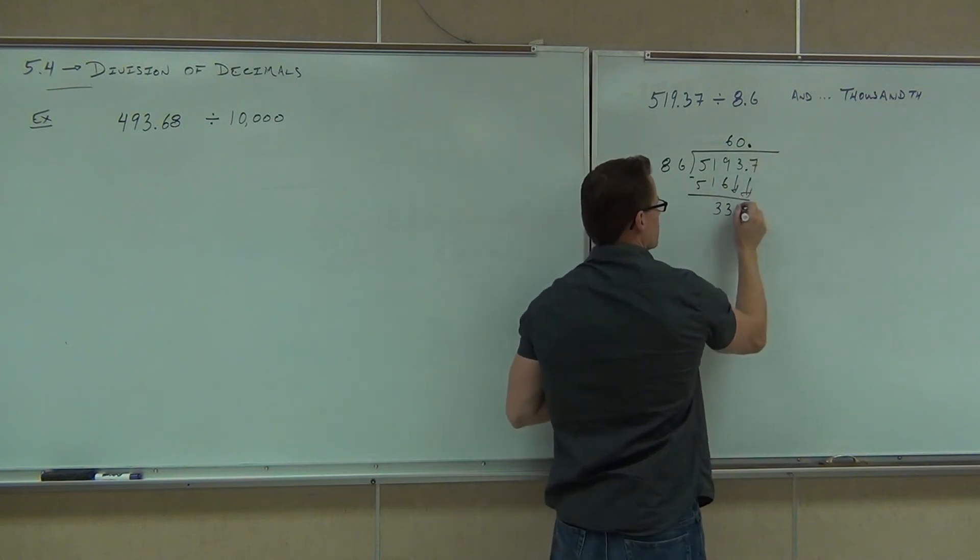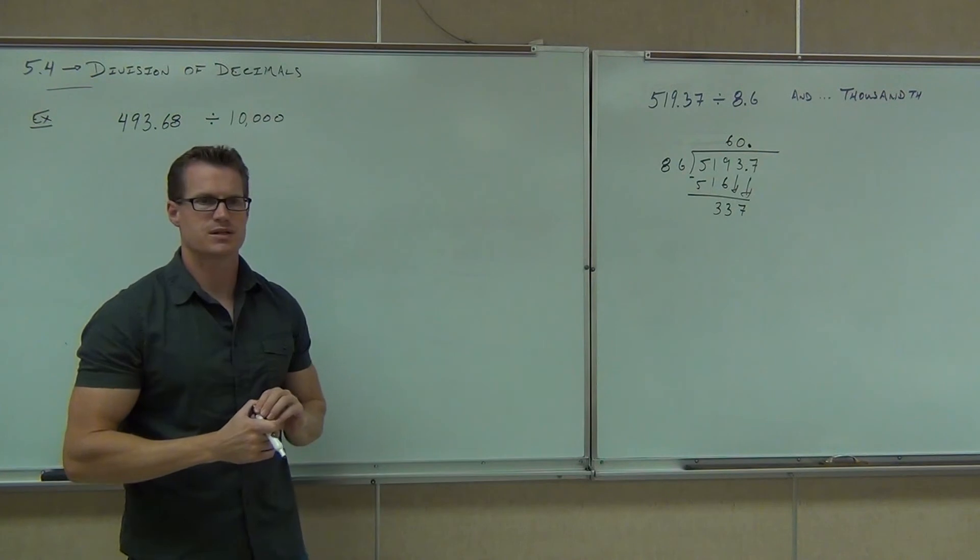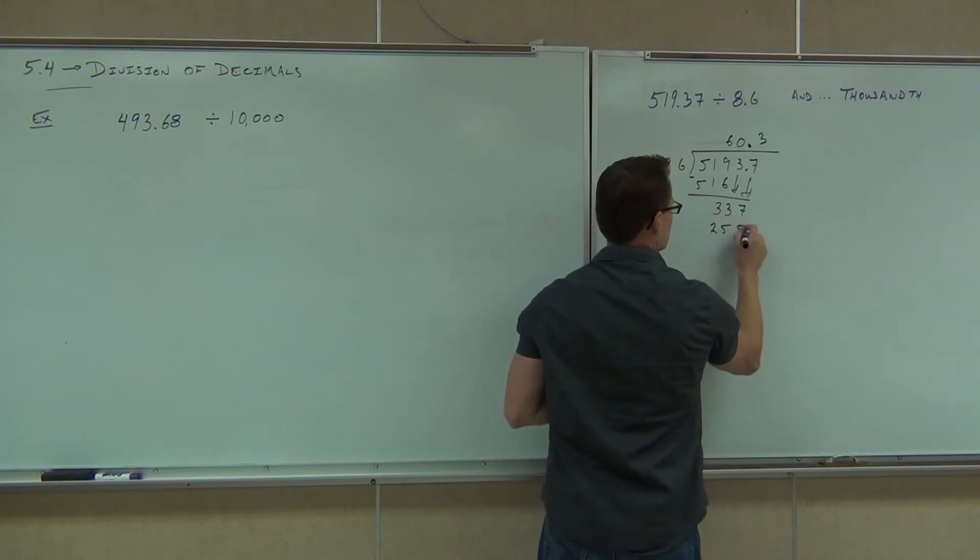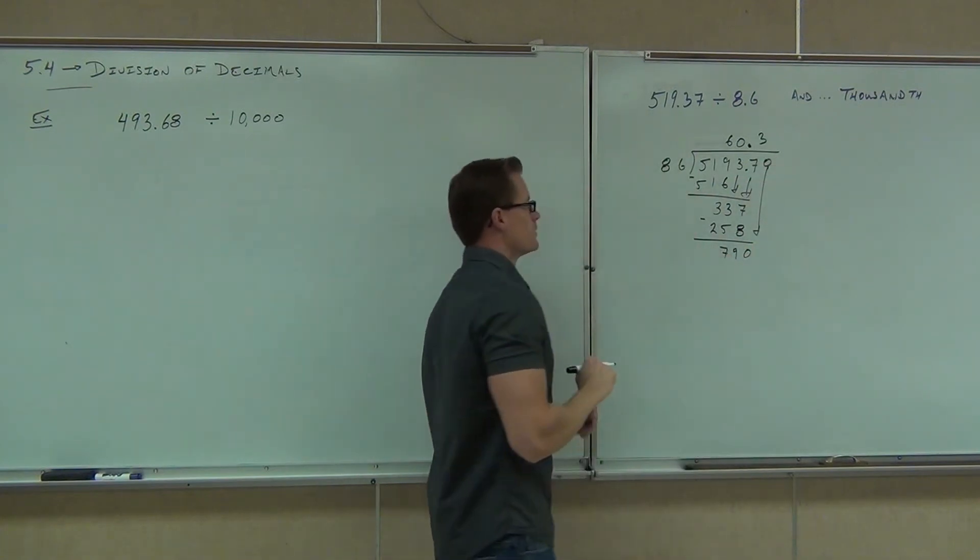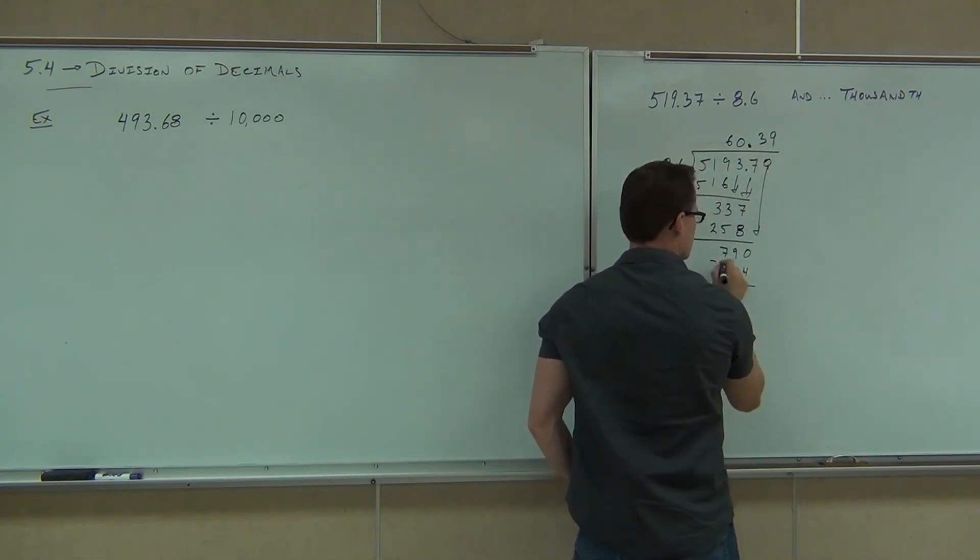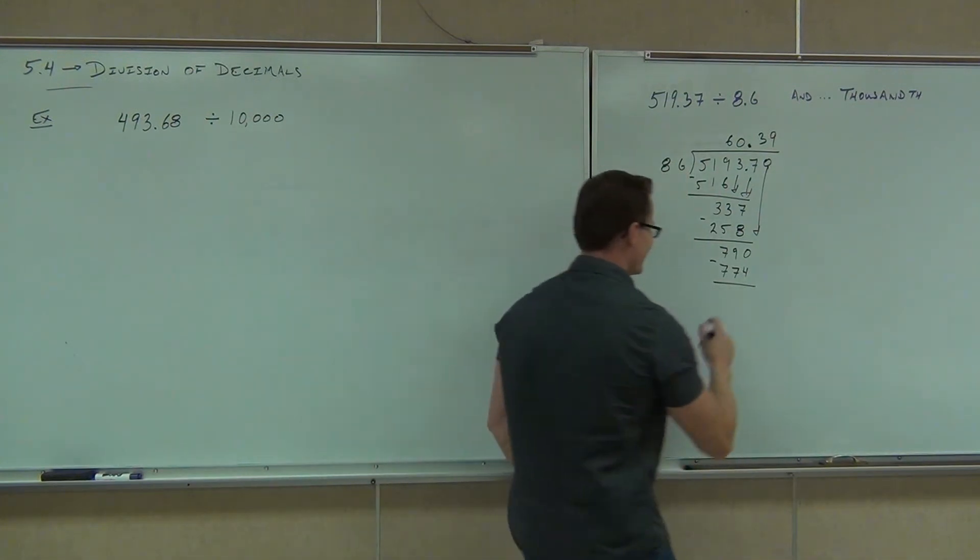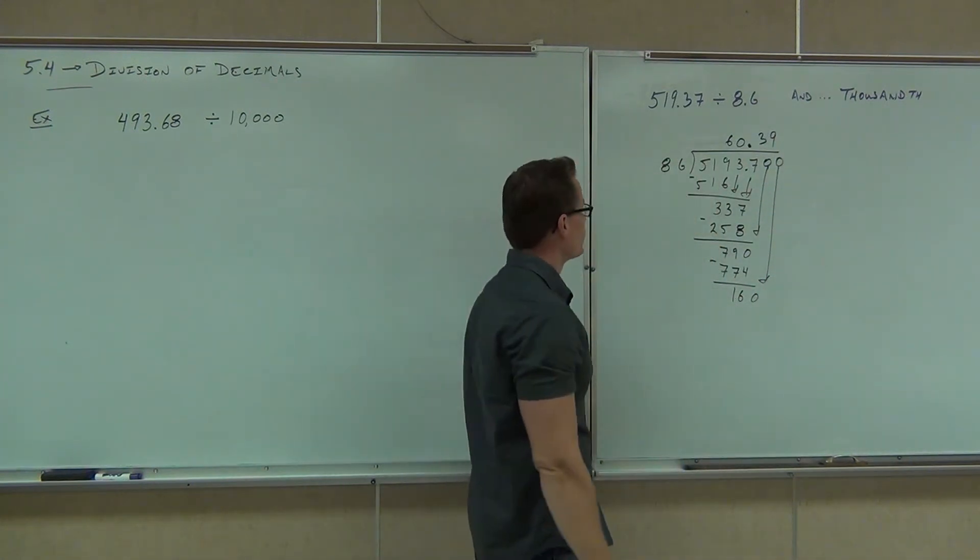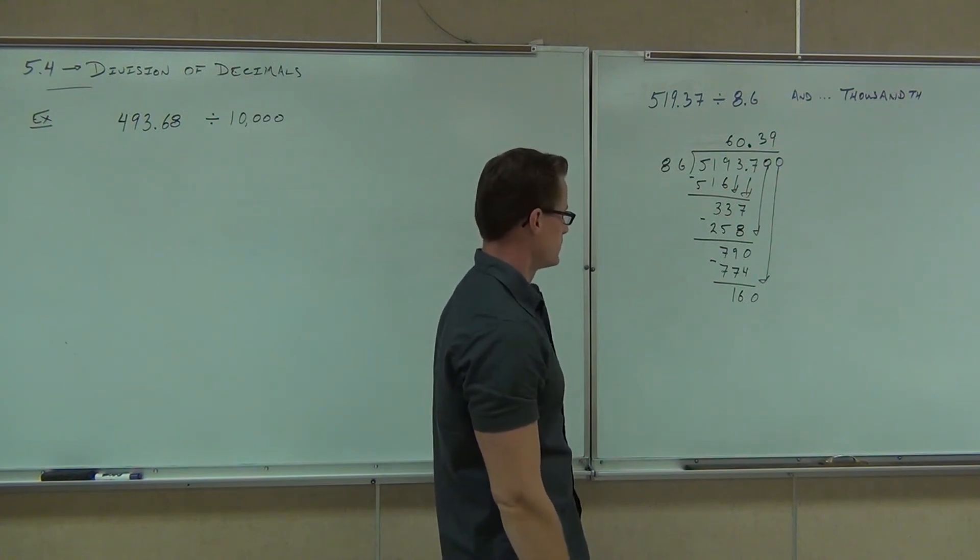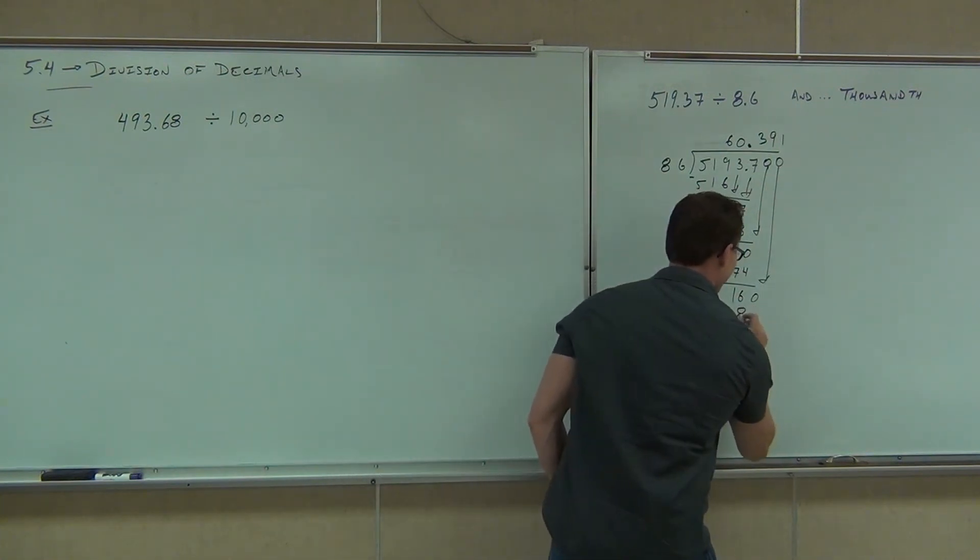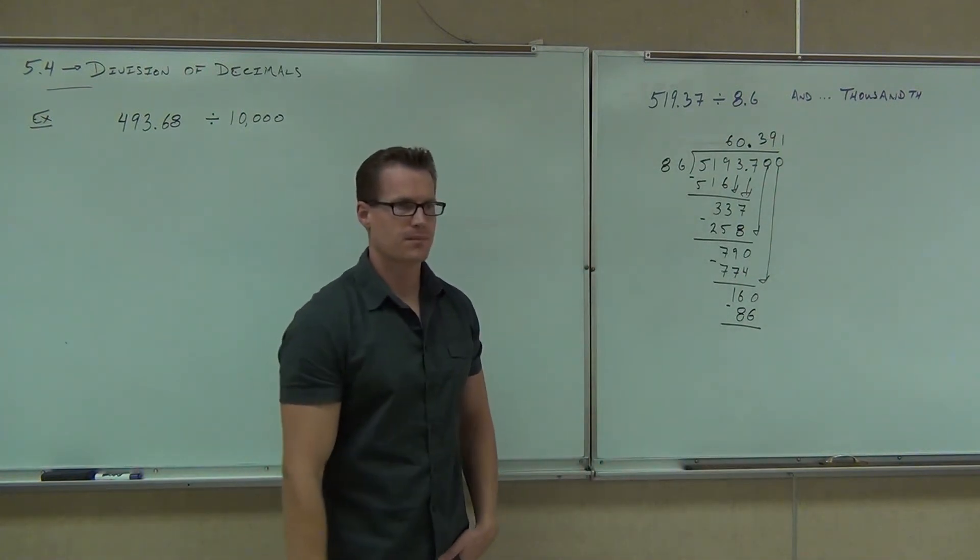And now we need to bring down another one, and we check. Oh, 86 into 337. Three times. Evenly? No. You get 258. You get 79. Bring down the 0. Nine times. 774. You get 16. Bring down the 0. Keep going. You go twice. One time. One time. My robot stopped. 86. Yeah, 86 because you're going to get 74, right? Yes.